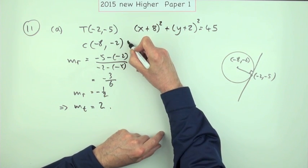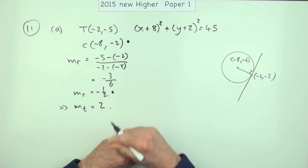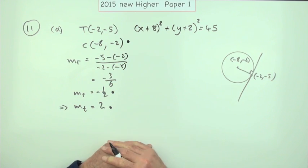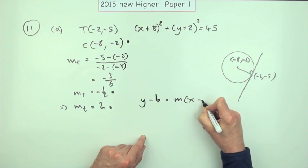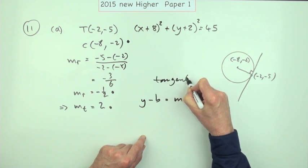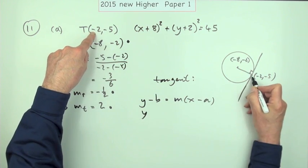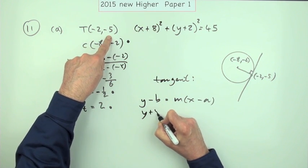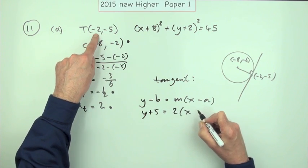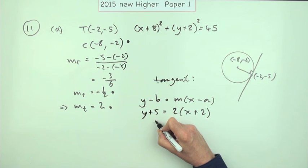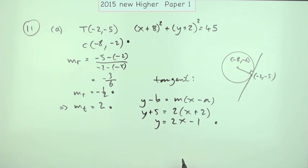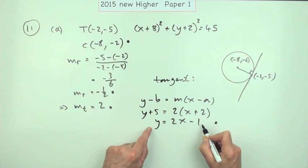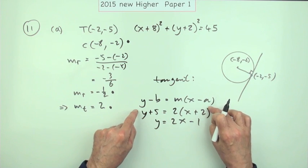As far as the marking scheme is concerned: finding the centre was the first mark, getting the gradient of the radius was the second mark, and getting the gradient of the tangent — the perpendicular — was the third mark. Now it's just a case of feeding it together for the fourth mark. Using y minus b equals m times x minus a: y plus 5 equals 2 times x plus 2, which tidies up to y equals 2x minus 1. That's the preferred answer, but you'll get the mark if you leave it in the other form too.